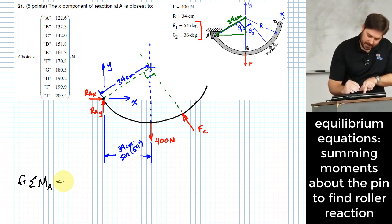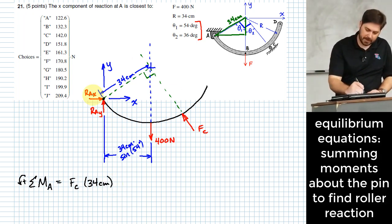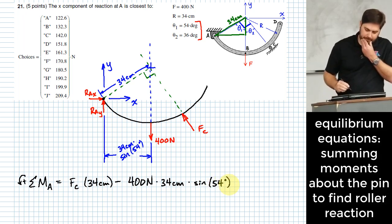Okay. So with that, I've got F sub C times 34 centimeters. Positive or negative if I'm using counterclockwise as a positive for my sum. Okay. Positive because it would be a counterclockwise influence around A. 400 newtons is going to be a clockwise influence around A. So I'm going to subtract that. And how far is it?